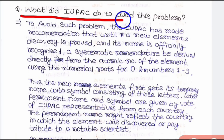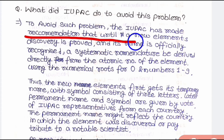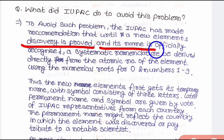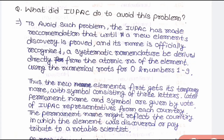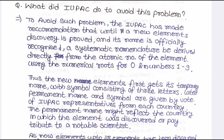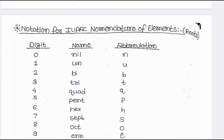The question is: what did IUPAC do to avoid this problem of nomenclature? To avoid such problems, IUPAC recommended that until a new element's discovery is proved and the name is officially recognized, a systematic nomenclature be derived directly from the atomic number of that element using numerical roots from 0 to 9. Simply put, the nomenclature will be based upon the atomic number.